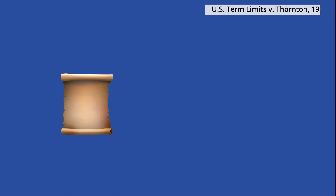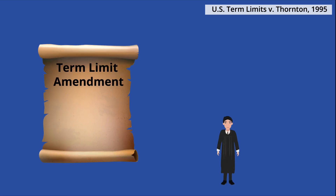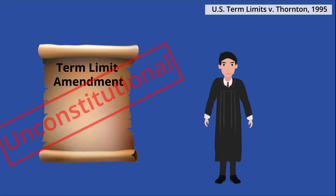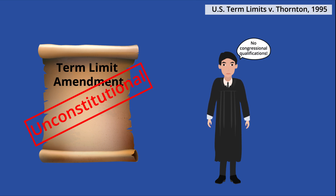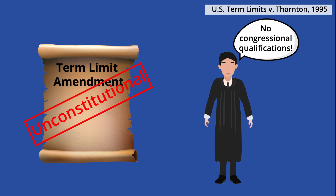In 1995, in U.S. Term Limits v. Thornton, the Supreme Court ruled that the Constitution prohibits states from adopting congressional qualifications in addition to those already established in the Constitution. The court also noted that the adoption of the 17th Amendment eliminated state power over the election of Senators, so Senators are to be elected directly by the people with no interference.